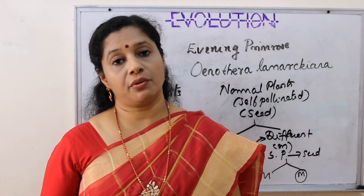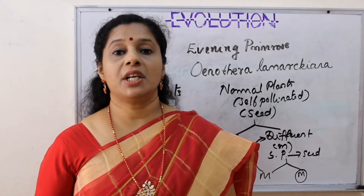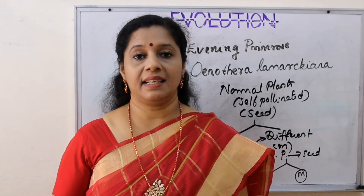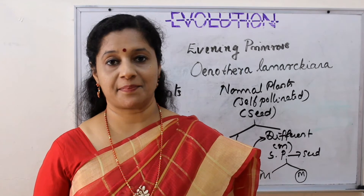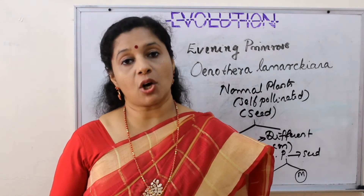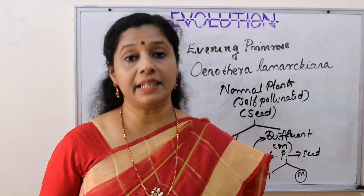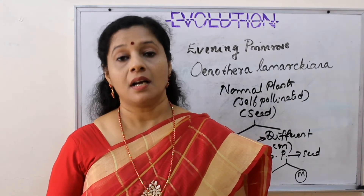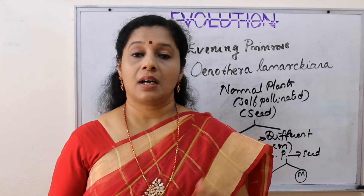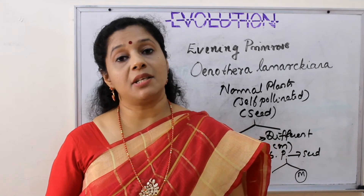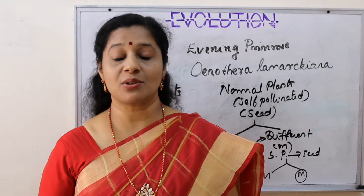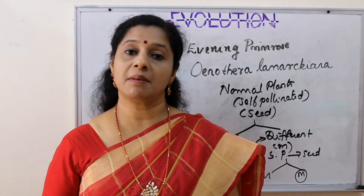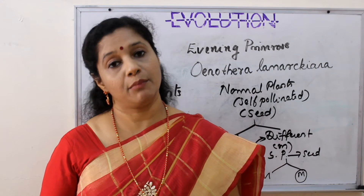Some notable features of mutation theory are: mutation is the raw material for evolution. Mutation happens suddenly and visible changes can be observed in the offspring. The newly formed offspring or mutant will be entirely different from the parents without any intermediate stages. Some mutations may occur so that the character can be chosen by nature - that is natural selection. Mutation has a genetic basis. New species can form from a pre-existing species only by mutation.